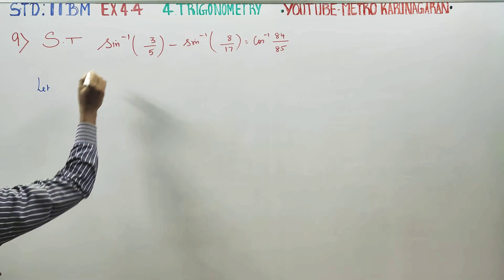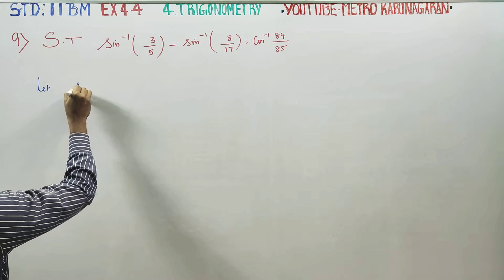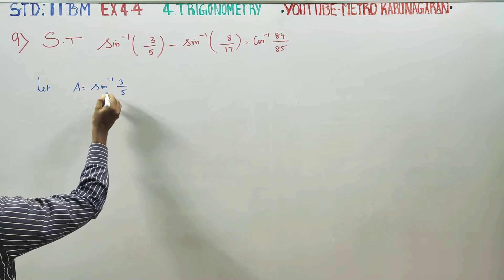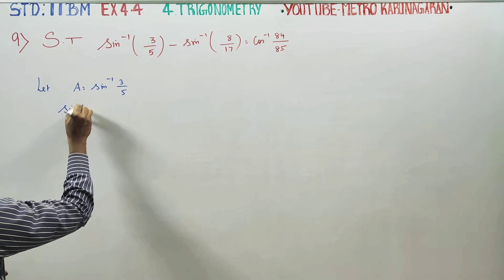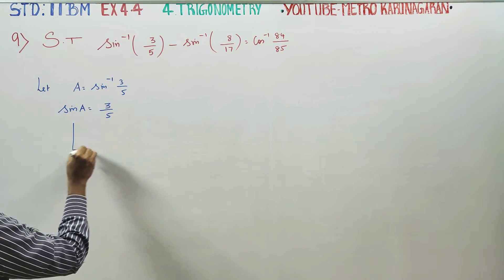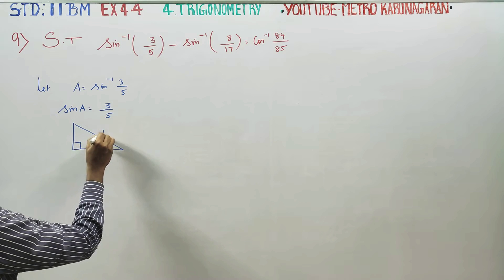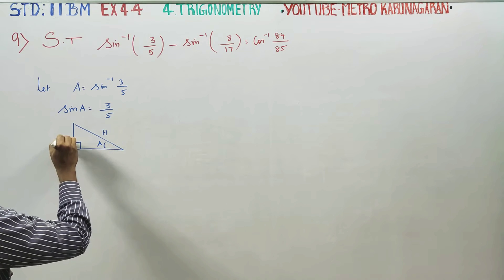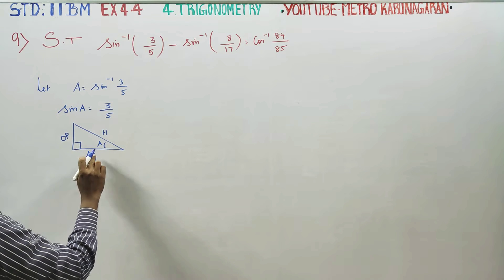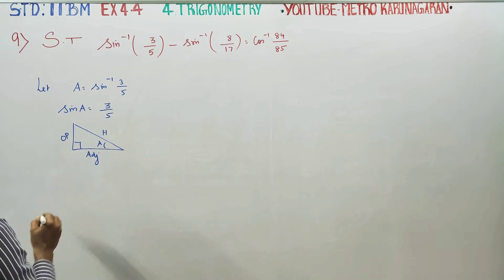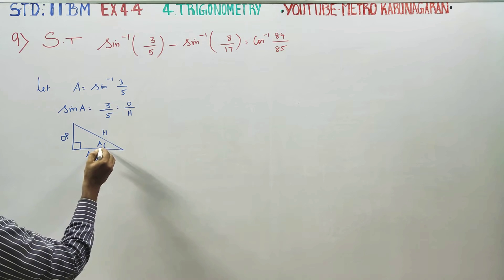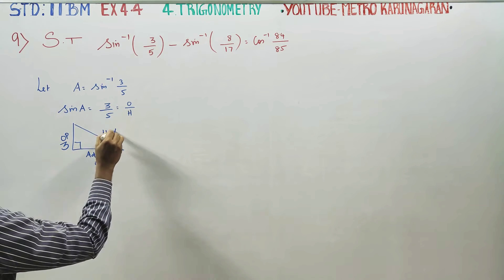Let's say A is equal to sin inverse of 3 by 5. Sin A is equal to 3 by 5. Draw one right angle triangle. This is the opposite side of A, this is the adjacent side. Sin inverse of opposite by hypotenuse, opposite is 3, hypotenuse is 5.